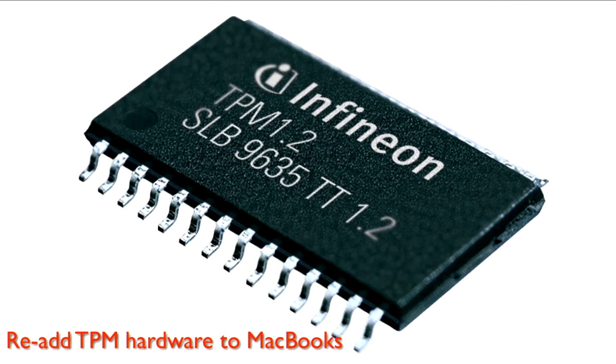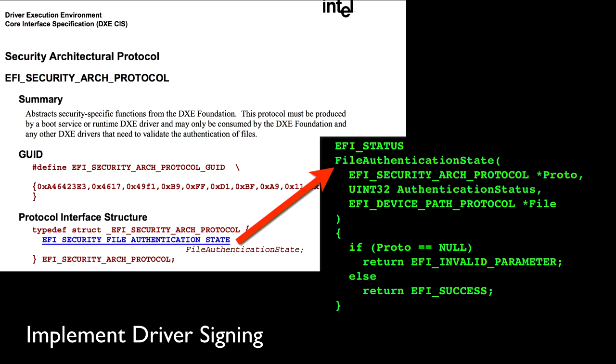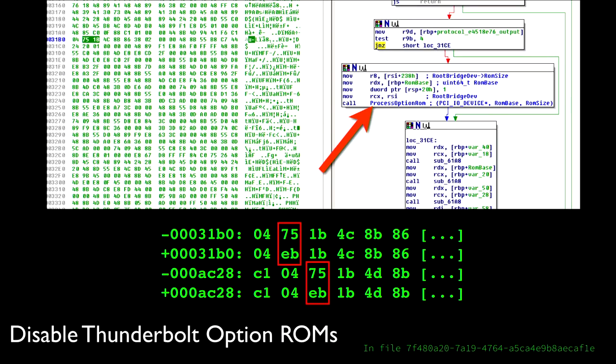Apple could also implement driver signing. Future EFI protocols have it as almost mandatory, but the version they have has this rather ill-defined, architecture-specific security protocol. They do implement it, but it turns out that proto can never be null, so it just unconditionally approves every option ROM it encounters, which does not provide any security at all. Because I don't think option ROMs are a great idea, I've modified all of my MacBooks to bypass the call to process option ROM. Thunderstrike actually does this on the systems it infects, so you can't use Thunderstrike to remove Thunderstrike — it's closed the door behind it.